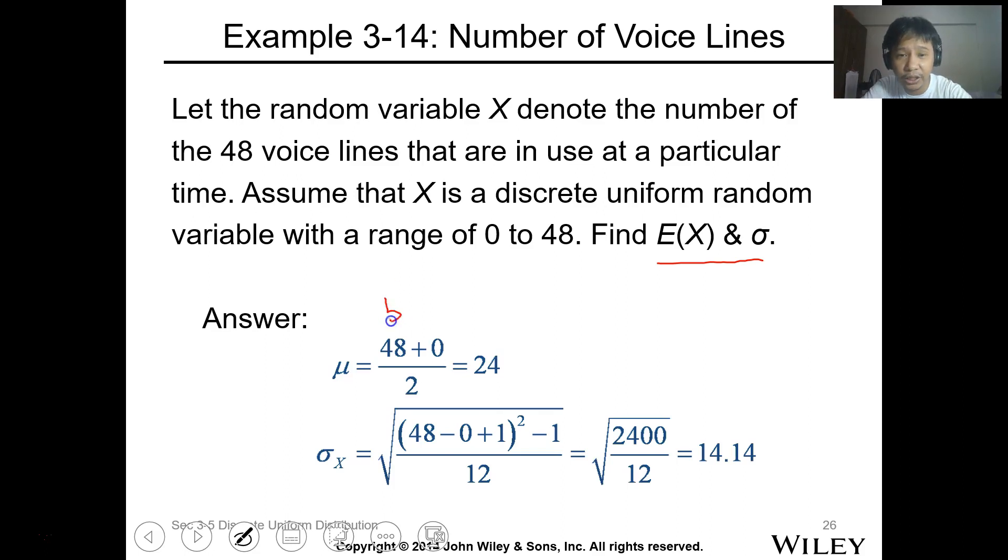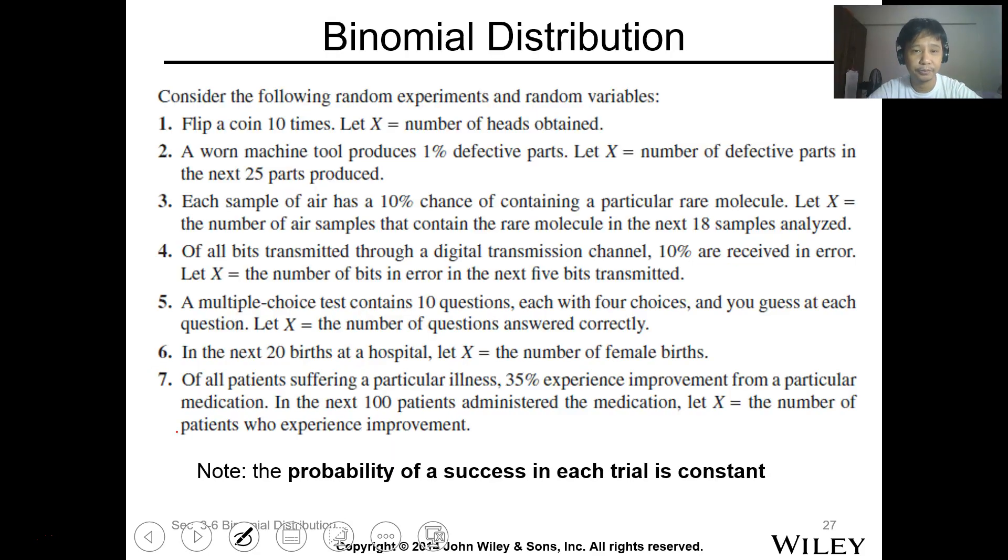Let's have this one. Let the random variable X denote the number of the 48 voice lines that are in use at a particular time. Assume that X is a discrete uniform random variable with range of value from 0 to 48. Find the expected value of X and the standard deviation. Standard deviation is just the square root of your variance. From this, we can calculate using the formula, this is b plus a over 2. And for the variance, this is b minus a plus 1 quantity squared minus 1 over 12. To get the standard deviation, take the square root. If you get your calculator and compute that one, that will be 14.40.